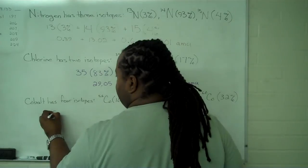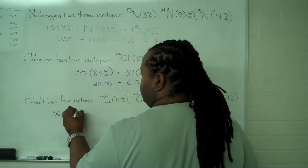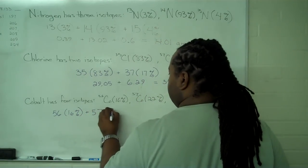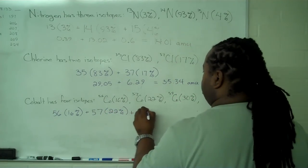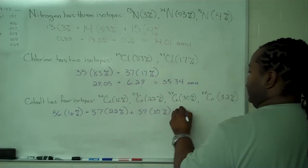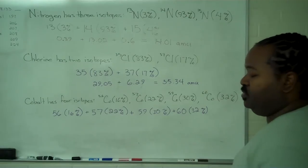We use the same process. So we have the mass times its relative abundance for each one of these. 22%. 59 times 30%. And 60 times 32%.